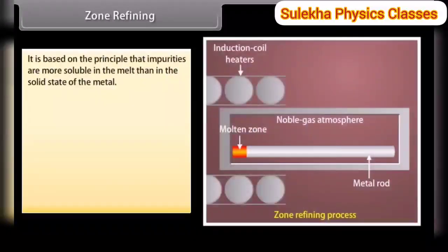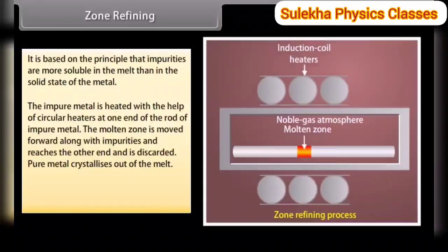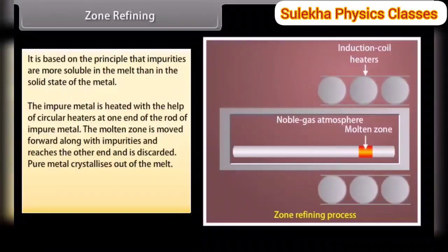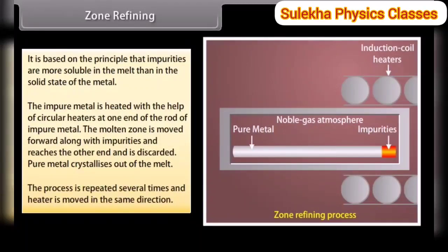Zone refining is based on the principle that impurities are more soluble in the melt than in the solid state of the metal. Circular heaters are used at one end of the rod of impure metal. The molten zone moves forward carrying impurities to the other end, which is discarded. Pure metal crystallizes out of the melt. The process is repeated several times in the same direction. For example, it is used for purifying semiconductors.